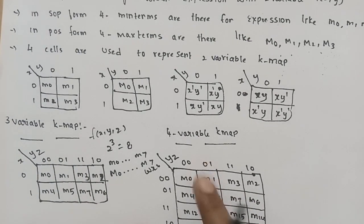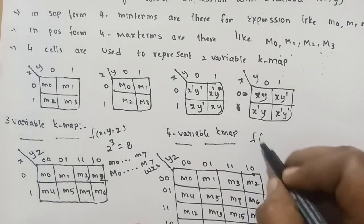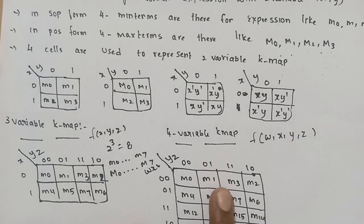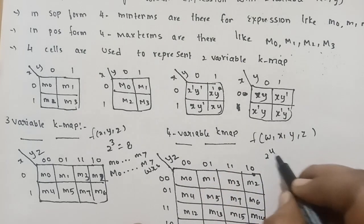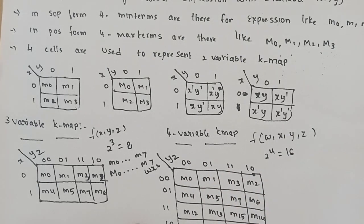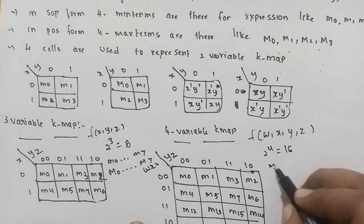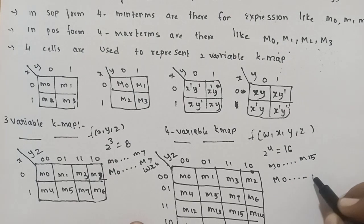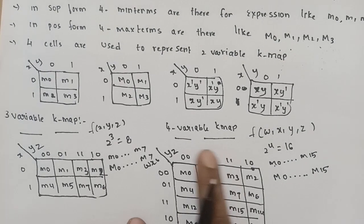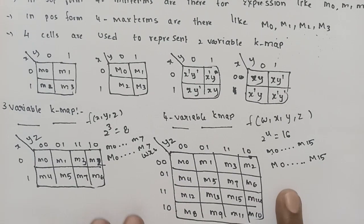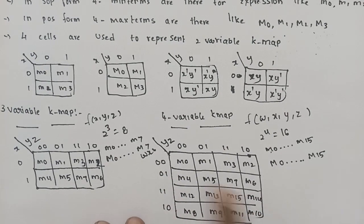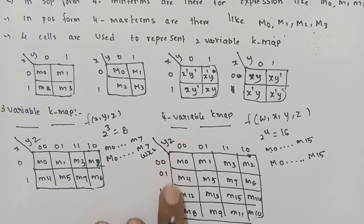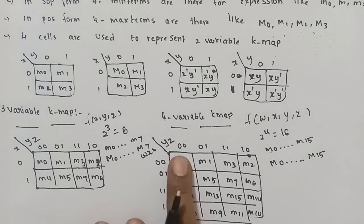For four-variable K-map, the Boolean expression uses four variables — for example W, X, Y, Z. Total: 2 power 4 equals sixteen min terms — M0 to M15 — and sixteen max terms — capital M0 to capital M15. So total sixteen squares are used in the four-variable K-map.